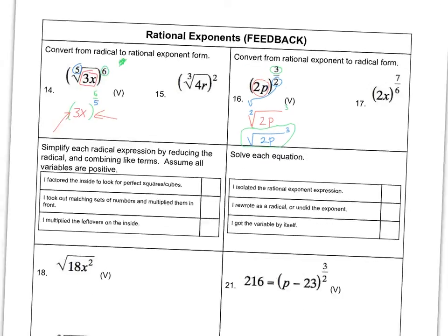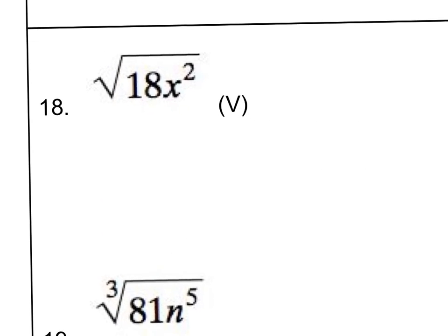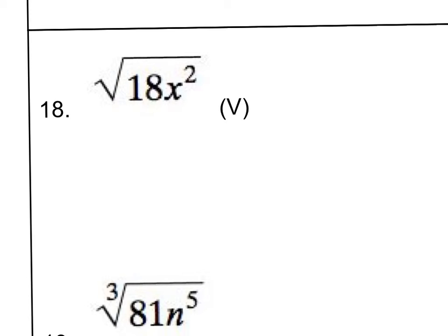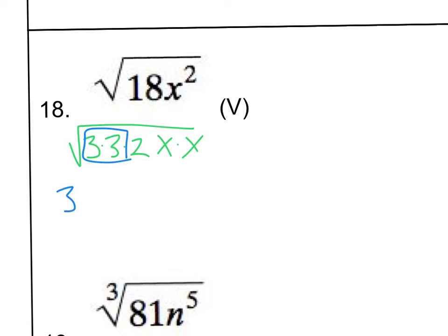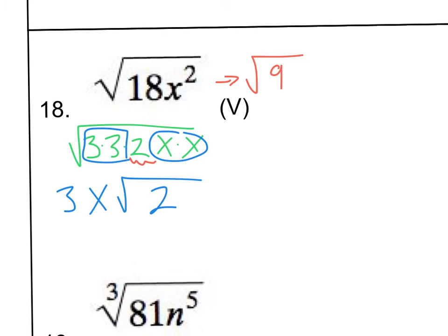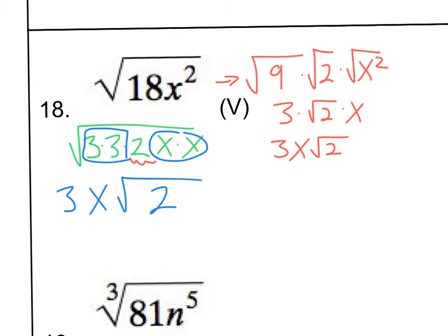For number 18, we've got to reduce this radical expression. I'm going to factor the inside into everything I can multiply to get to 18: that's 3 times 6, and 6 is 3 times 2. And X squared is X times X. I've got a pair of 3s — the square root of 3 times 3 is just 3 out front. I've got a pair of X's, so I can pull one out. I'm left with 2 on the inside. Alternatively, you can see this as the square root of 9 times the square root of 2 times the square root of X squared, giving you 3X times the square root of 2 — same answer either way.